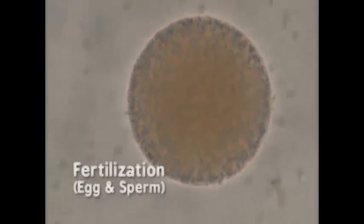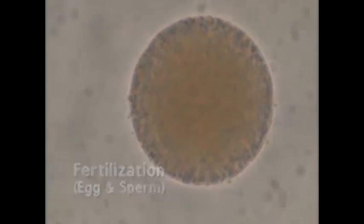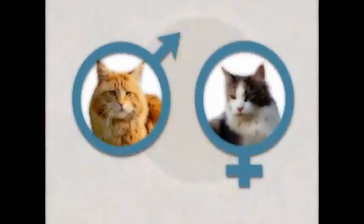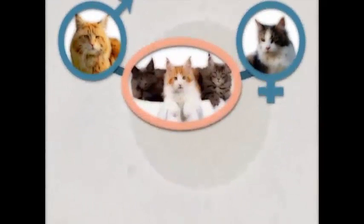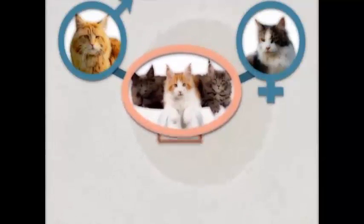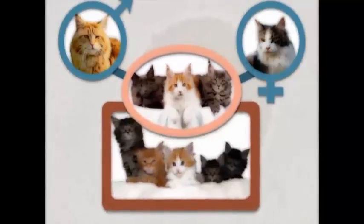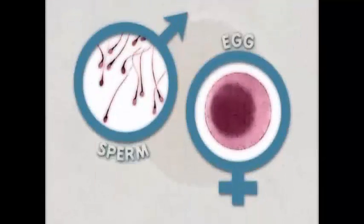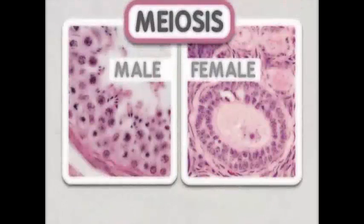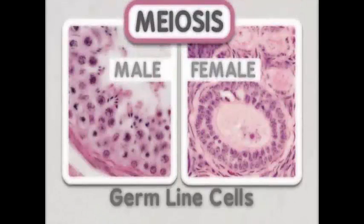Many organisms pass their genes to their offspring through sexual reproduction. This begins when two gametes unite to form an embryo that is genetically unique from the parent organisms. The embryo then grows into an adult who in turn passes their genetic information on to their own offspring.